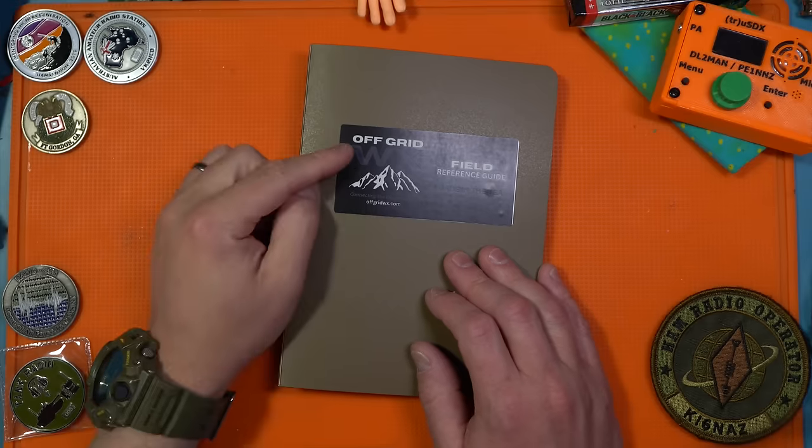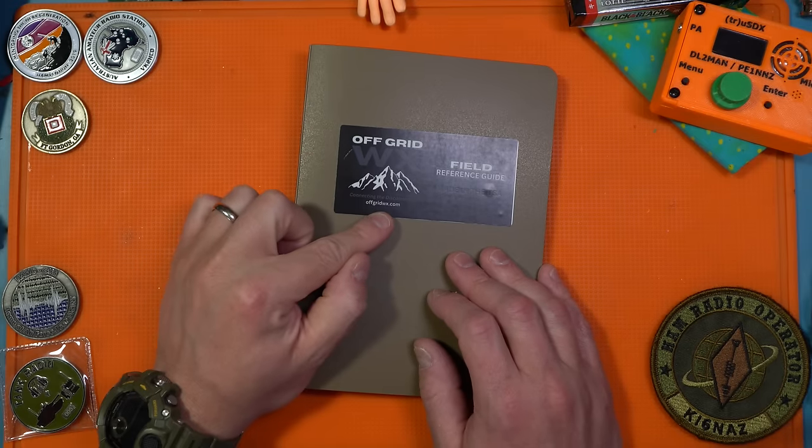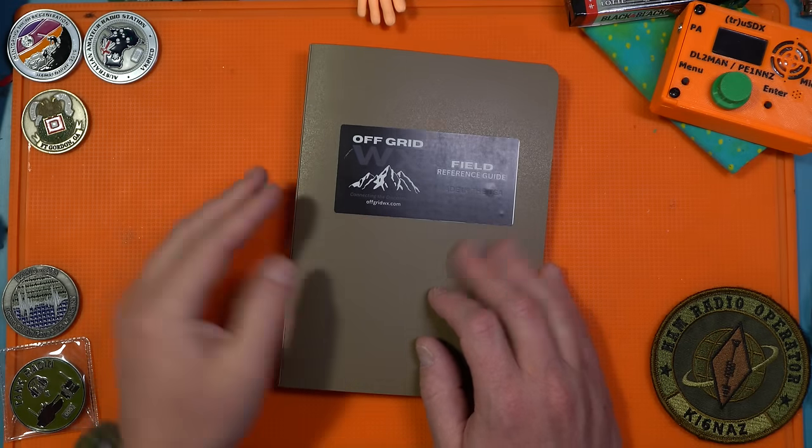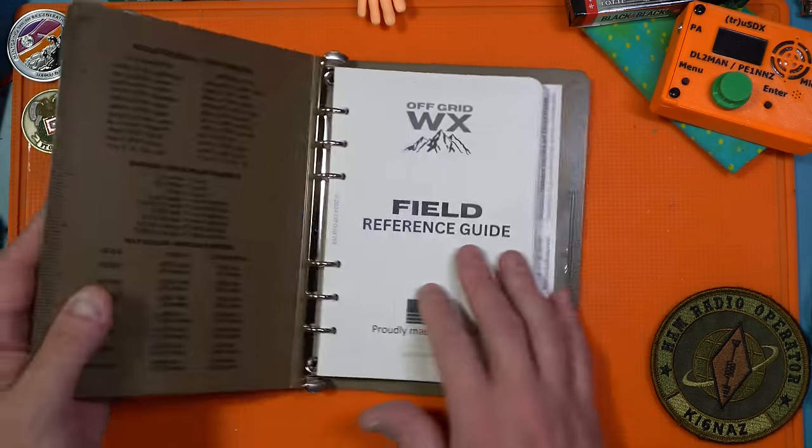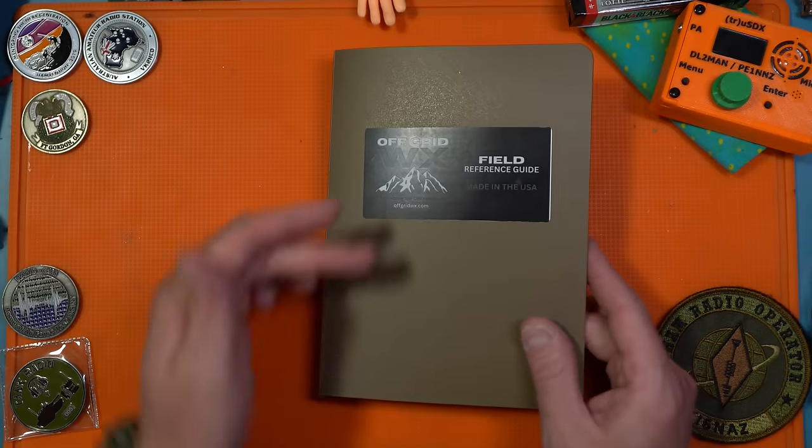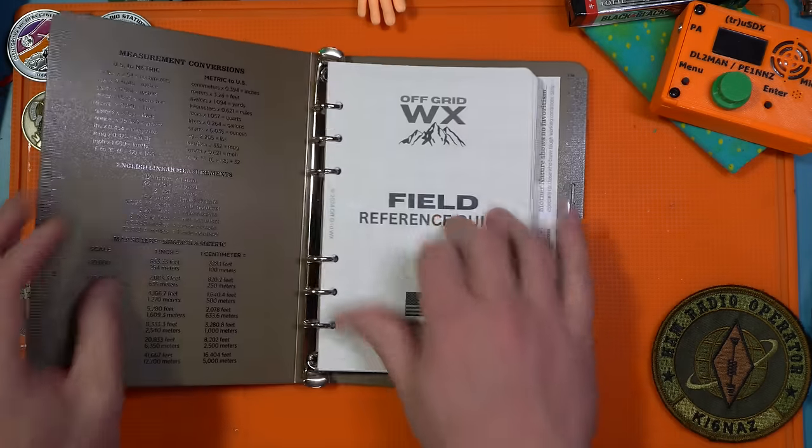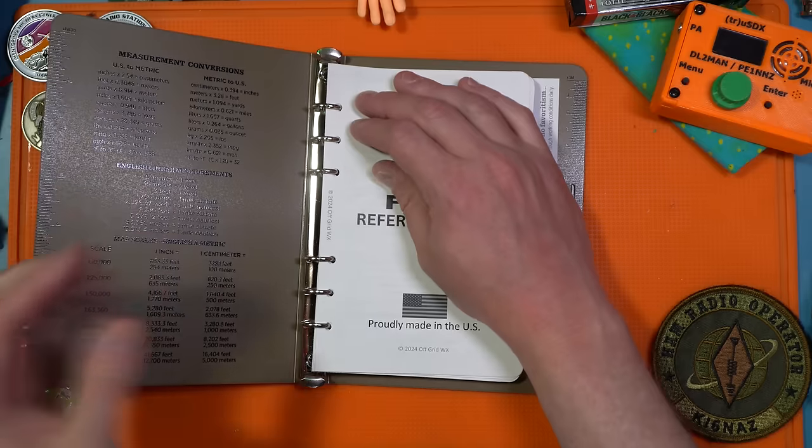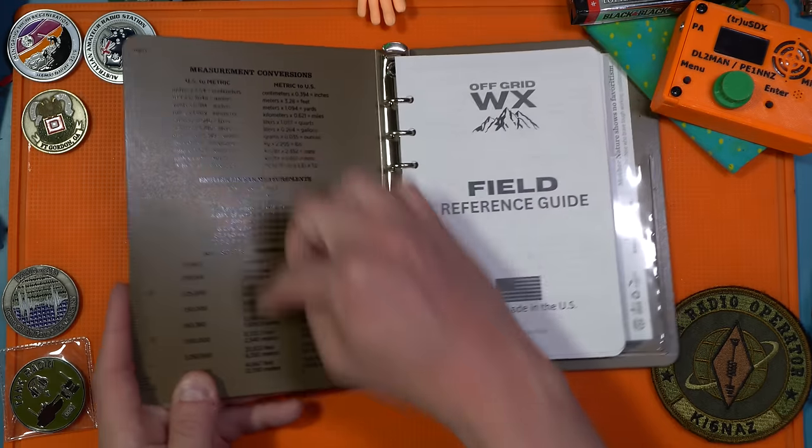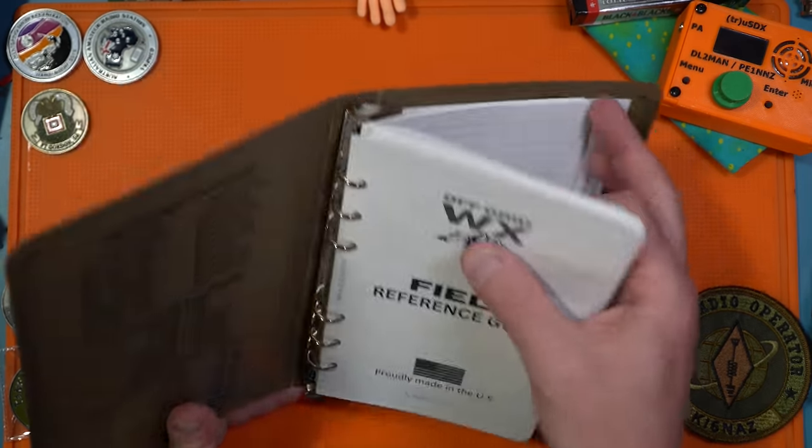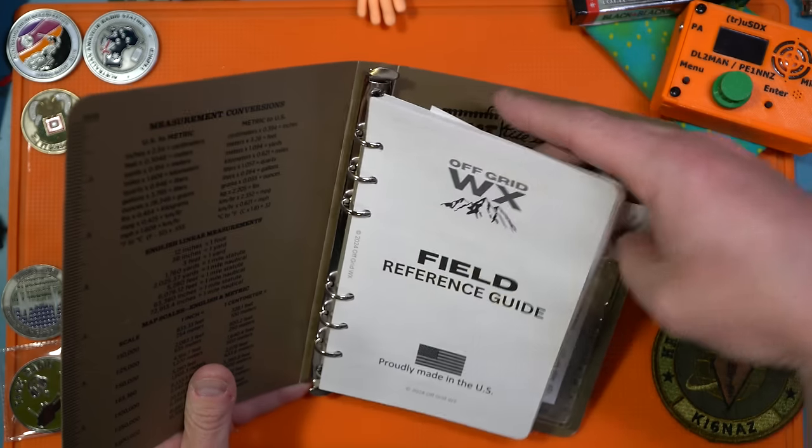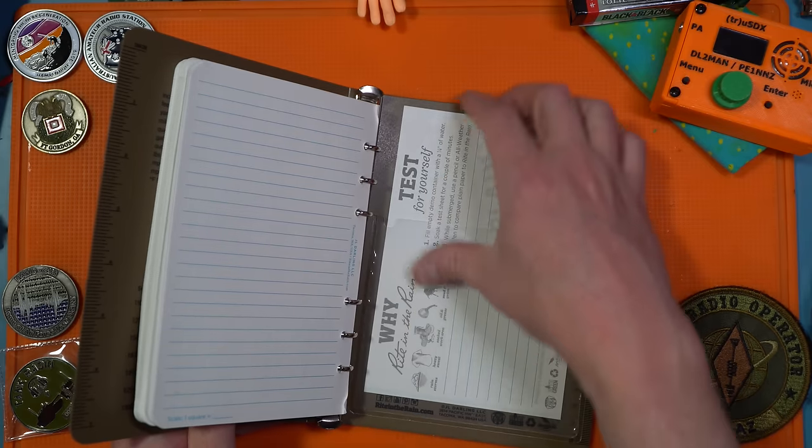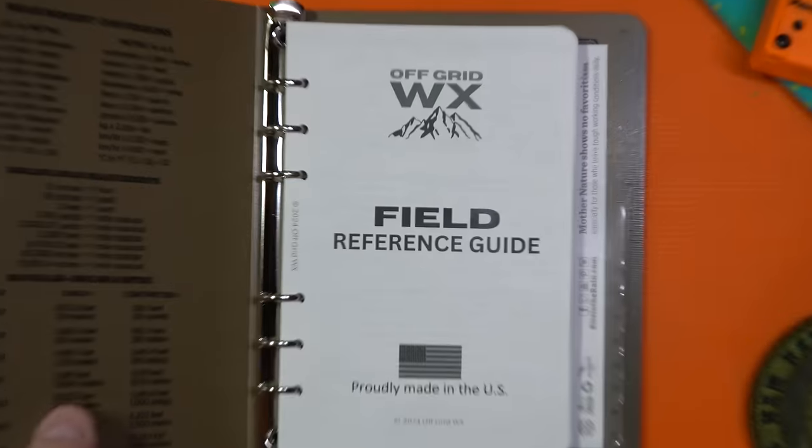So we're taking a look at the Off-Grid WX. You can go to offgridwx.com field reference guide. They've got a number of things on their website, but it's using a right-in-the-rain kind of binder-ish thing, and this is a six-ring binder, so make sure you've got the right holes for it. Standard measurements. I believe this is all right-in-the-rain stuff on the outside. Not necessarily added, but there's a pocket as well, which is kind of useful.